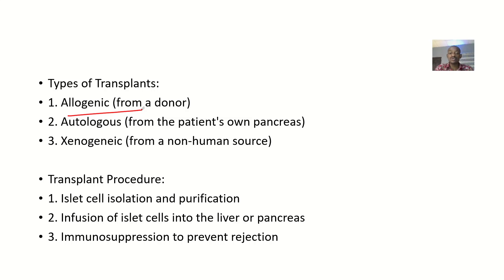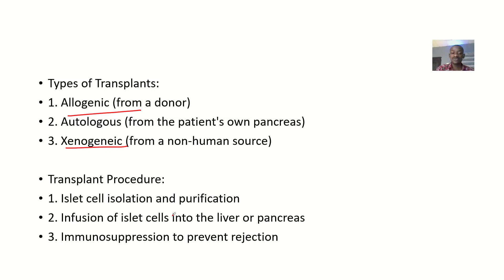What are the types? It could be allogeneic — getting cells from another person. It could be autologous — where they take your own cells. For example, if they want to remove a large part of the pancreas and find good cells there, they remove those cells before the surgery and replace them again afterward. It could also be xenogeneic — from a non-human source.